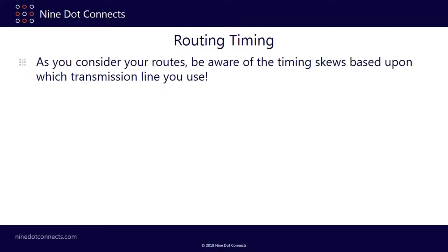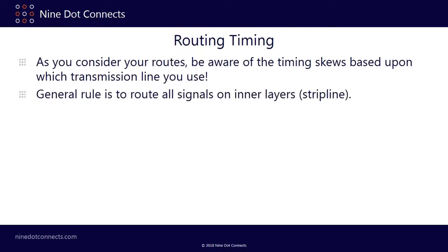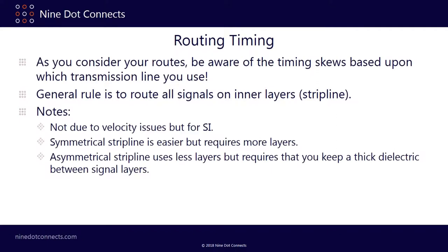As you consider your routes, be aware of timing skews based on which transmission line you use. The general rule among experienced engineers is to route all signals on inner layers in a stripline fashion — mostly for signal integrity, not just velocity reasons. Symmetrical stripline is easier but requires more layers; asymmetrical stripline uses fewer layers but requires a thick dielectric between signal layers.